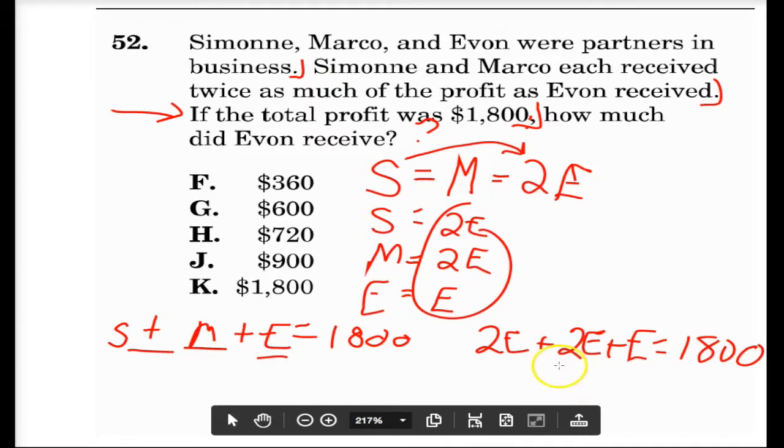So now you do your good old algebra. So 2E plus 2E plus E equals 5E, and that equals 1,800. You divide both sides by 5.